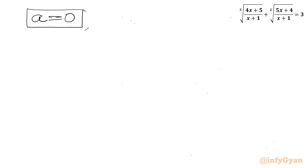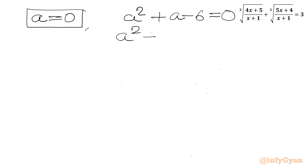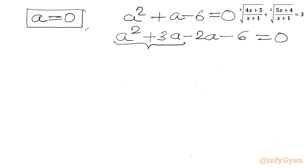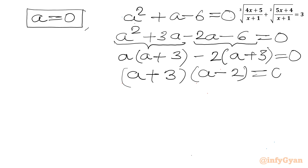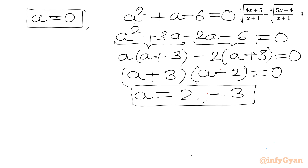Solving the quadratic a² + a - 6 = 0 by factoring: split +a as +3a - 2a, giving a(a + 3) - 2(a + 3) = 0, so (a + 3)(a - 2) = 0. Thus a = 2 or a = -3. Overall, a = 0, 2, or -3.